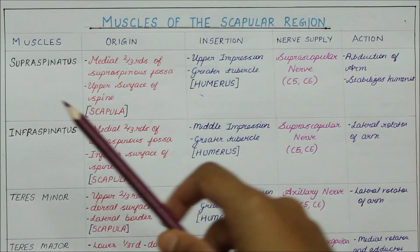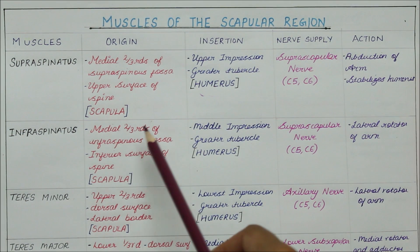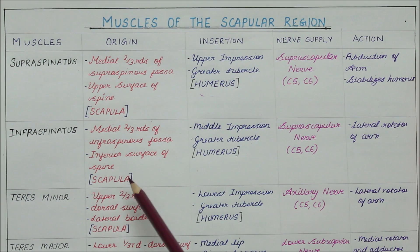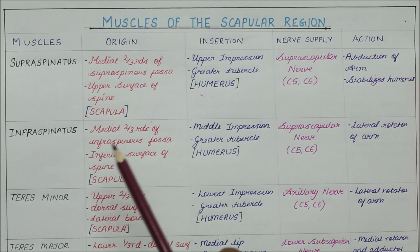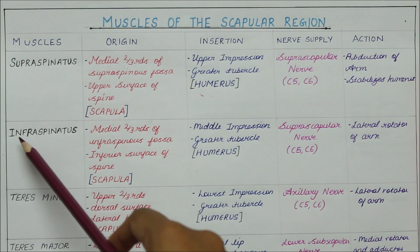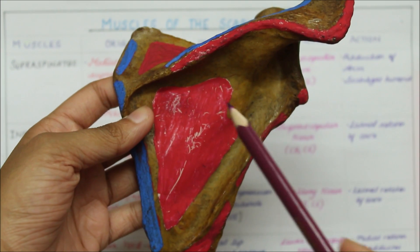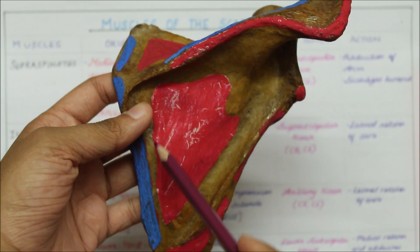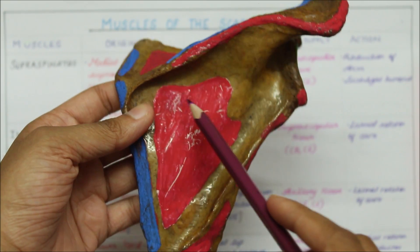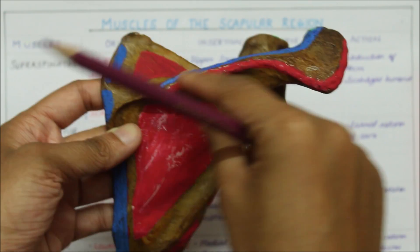Moving on to the next muscle, the infraspinatus. It originates from the medial two-thirds of the infraspinous fossa and the inferior surface of the spine of the scapula. To remember this, we can look at the word 'infra' which is common in both infraspinatus and the infraspinous fossa. The infraspinatus originates from the medial two-thirds of the infraspinous fossa, as you can see right here, and the inferior surface of the spine of the scapula.